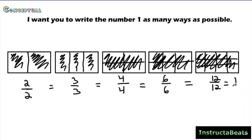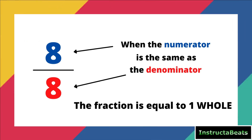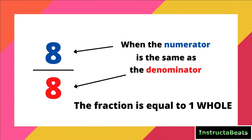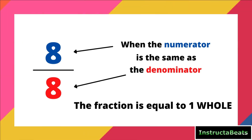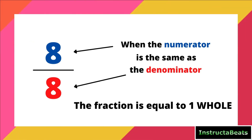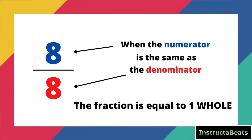This leads us to our first key idea: when the numerator is the same as the denominator, the fraction is equal or equivalent to one whole. For example, my numerator is 8 and my denominator is also 8 — that equals one whole. That's our first key idea.